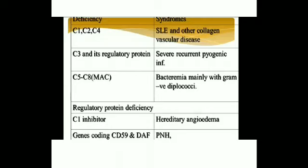Regulatory protein deficiency, for example C1 inhibitor deficiency leads to hereditary angioedema, while gene encoding CD59 and DAF lead to PNH. What is PNH? It is paroxysmal nocturnal hemoglobinuria.